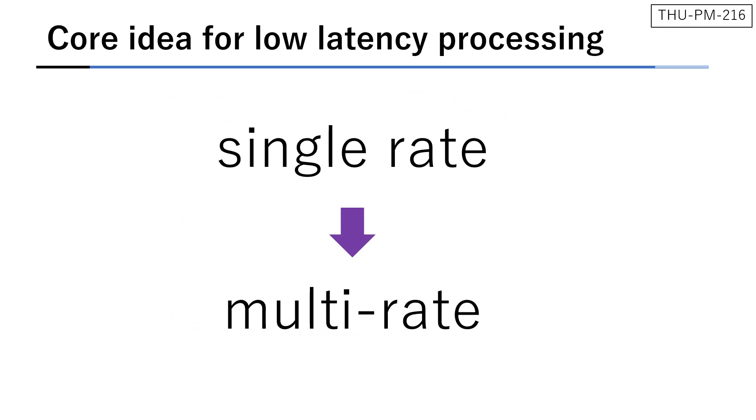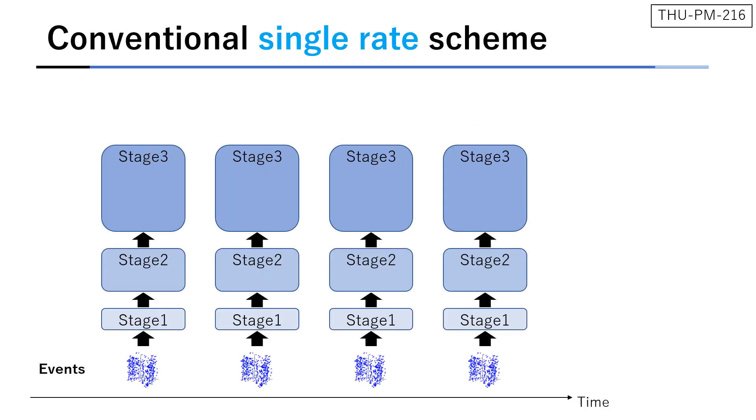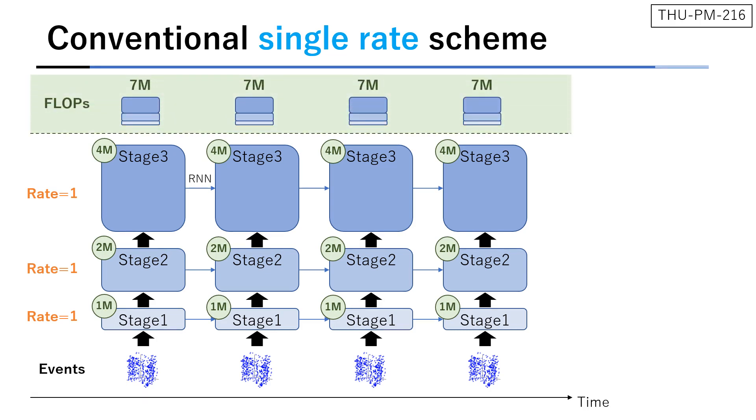The core idea for low latency processing is to change network design from single rate to multi-rate. This slide shows an example of conventional single rate models. The network works at a single rate because each stage is executed at every time step. Suppose the computational complexity of the stages are 1, 2, and 4 mega flops. Then, the network requires 7 mega flops per time step.